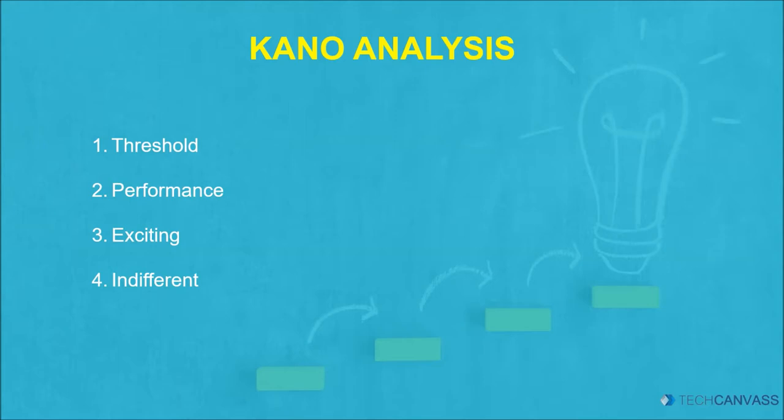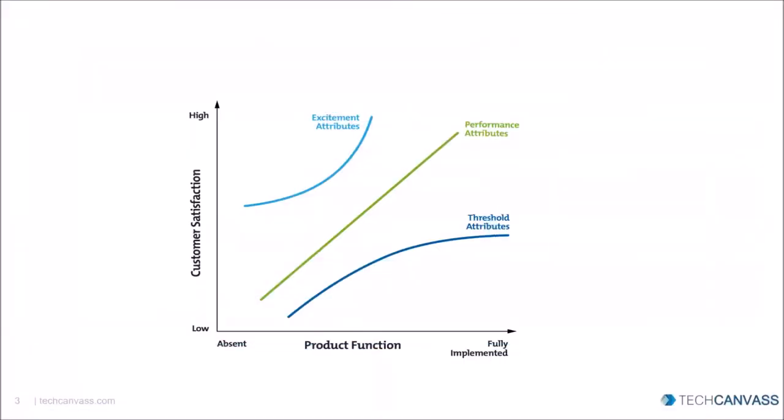It can also help identify which features should be defocused. There can be several factors of defocusing like market position of the organization, competitors' performance, budget constraints, or something else. Kano Analysis requires extensive customer study. The resulting graph is then plotted on a matrix, something like this.